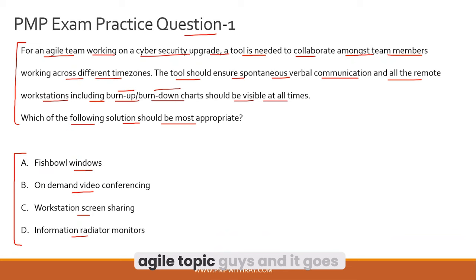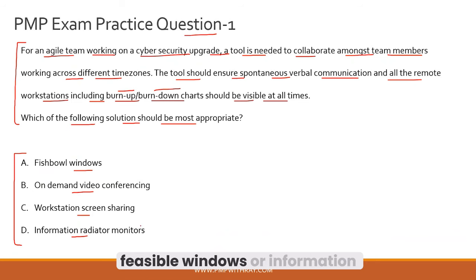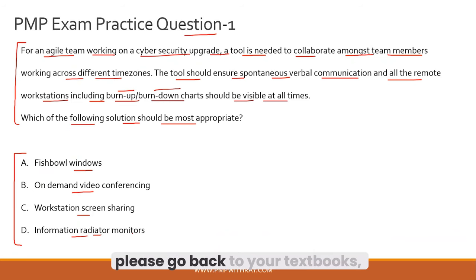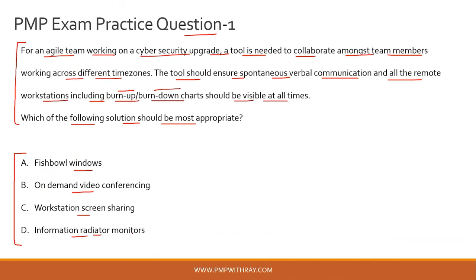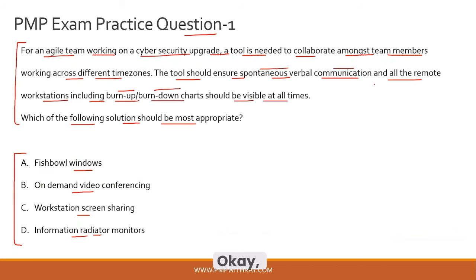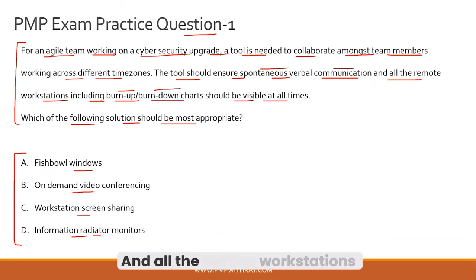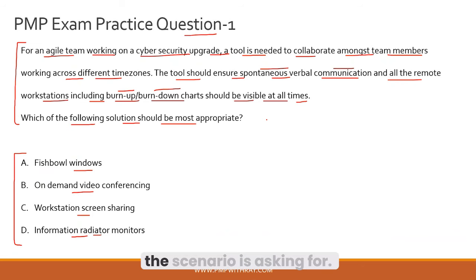This is a question on the agile topic. Terms such as fishbowl windows or information radiators should be at your fingertips when writing the PMP exam. The requirement is that the tool should ensure spontaneous verbal communication — verbal can be virtual, as long as it is verbal. All remote workstations including burn-up and burn-down charts should be visible at all times, so it's essentially a 24/7 window the scenario is asking for.